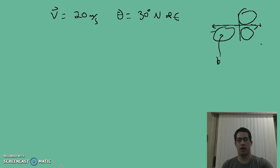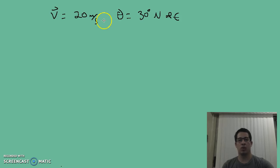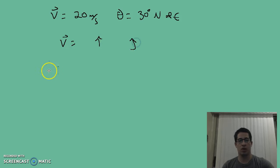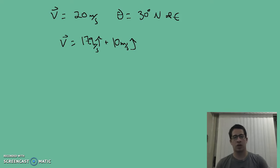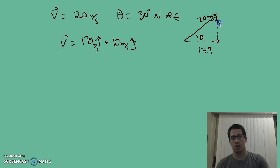We're going to start by taking this velocity vector and breaking it into components. We need to write this velocity vector in unit vector notation. We're using sine and cosine — the vector looks like this: 20 meters per second at the given angle. The x-component is about 17.9 and the y-component is 10. We find each of these by multiplying 20 times cosine of theta and 20 times sine of theta.